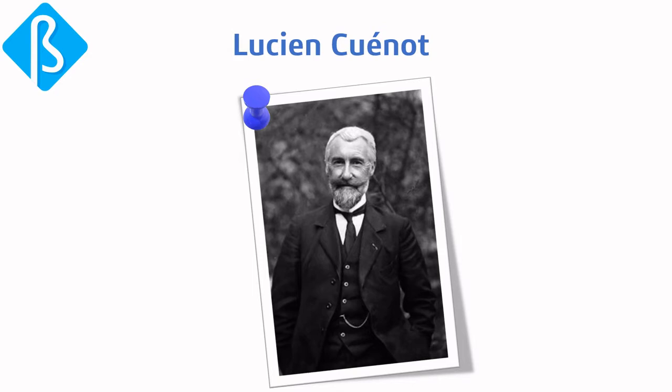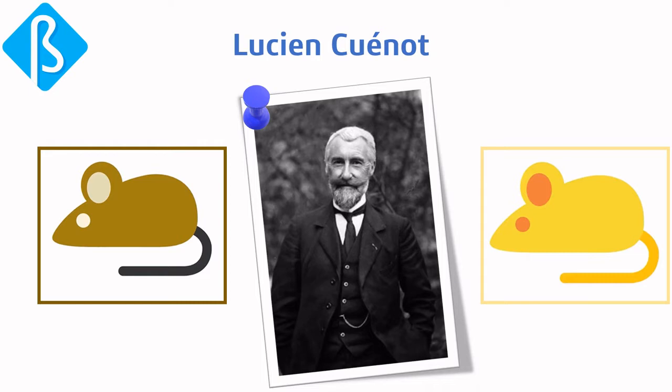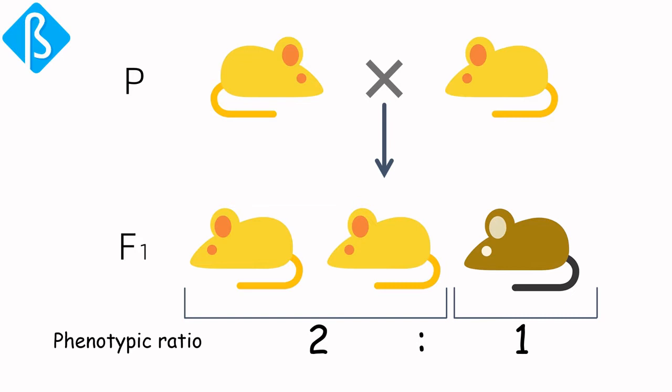From various extensions, let us look at an experiment done by Lucien Cuénot in 1905. He observed two different coat colors in mice — one was brown and one was yellow. Consider A as the allele for brown color and Ay as the mutated allele that gives yellow color. After mating two yellow mice, he observed that the offspring never showed the normal 3:1 phenotypic ratio; instead, he always observed a 2:1 ratio.